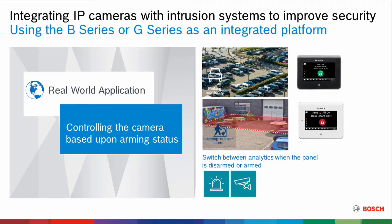Then the alarm panel triggers — turn on the floodlights, play a message: 'Thank you for your interest. Please come back during business hours.' Something to scare that person away so they don't throw a brick through your window. We can also control this by the armed state of the panel, by a schedule, an output — anything that makes sense for the application. The alarm panel can actually be used to control the camera, which allows it to make decisions based upon the status of the building: armed or disarmed, day or night — all those things can drive different analytics.